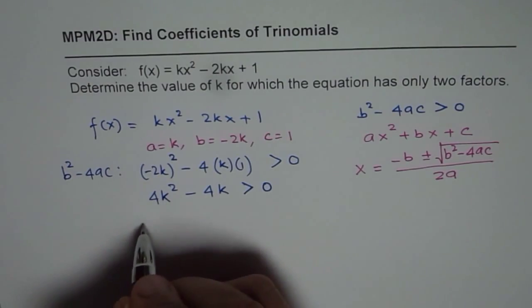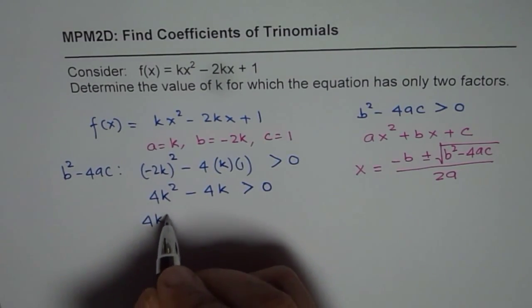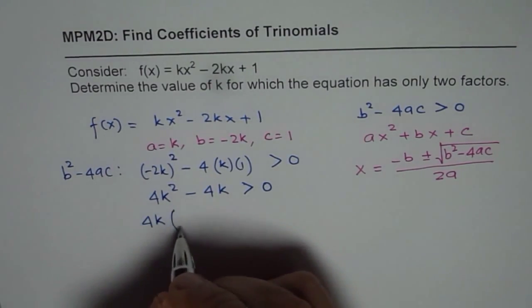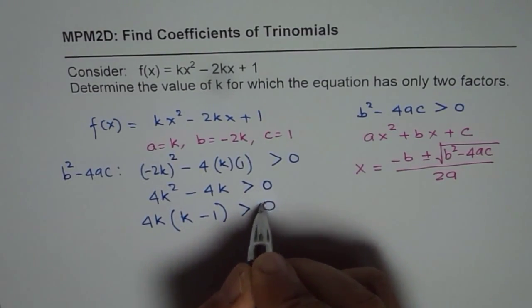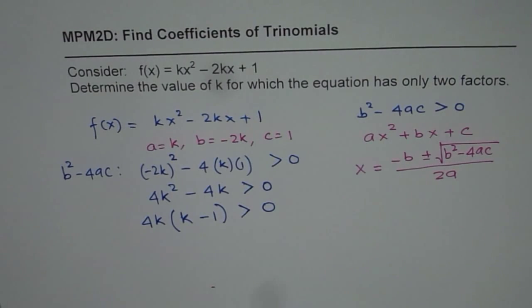This can be factored. So let us take 4k common and what do we get. We get k minus 1 that should be greater than 0. Now the question is we have a condition. How to figure out what k is.